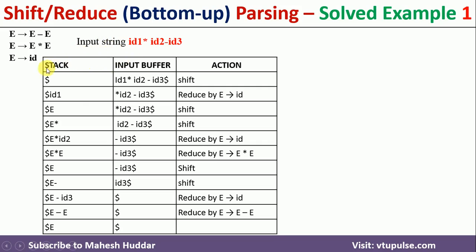We have three things: the stack, the input buffer, and the action performed. Initially, the stack contains only a dollar sign. The input buffer holds the input string ending with a dollar. Since there is nothing on the stack top we cannot apply any rule, so we perform a shift of the first token id1 onto the stack. The remaining content — star, id2, minus, id3 — stays in the input buffer.